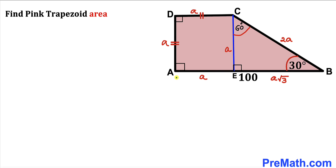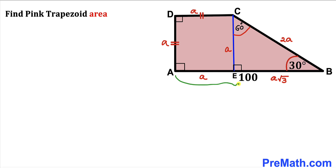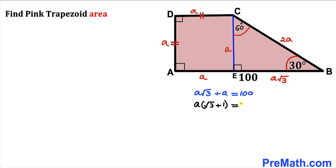Now let's observe that the whole base AB equals the sum of segments AE and EB. Furthermore, base AB is 100 units. So therefore I can write: a times square root of 3 plus a equals 100. Here a is in common, so I can factor a outside: a times (square root of 3 plus 1) equals 100. Dividing both sides by (square root of 3 plus 1), our a value turns out to be 100 divided by (square root of 3 plus 1).